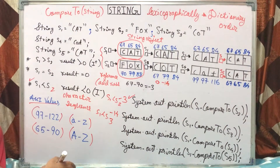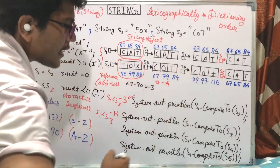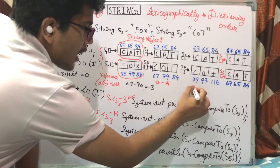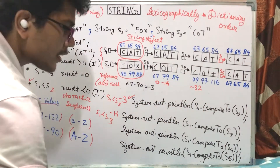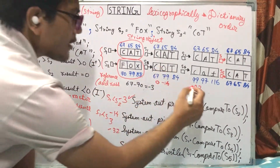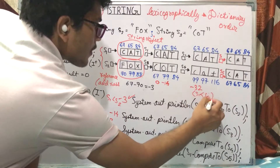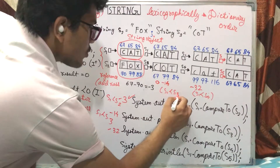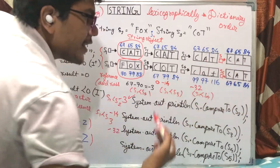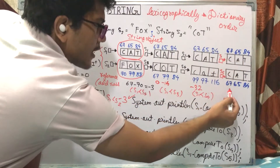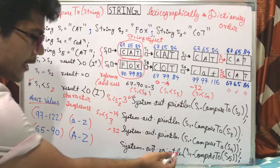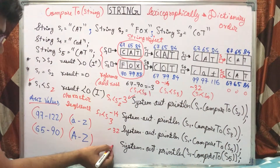Now comparing CAT uppercase with cat lowercase. The first character: capital C is 67, small c is 99. So 67 minus 99 gives minus 32. The output is minus 32, so S1 is less than S4. And for s1.compareTo(s5), since both are uppercase CAT, what will the output be? Zero.